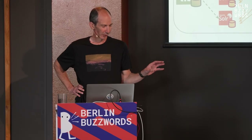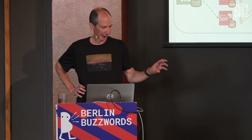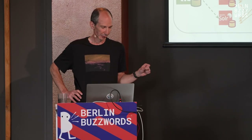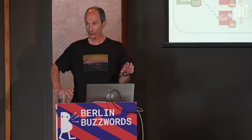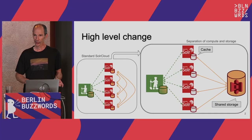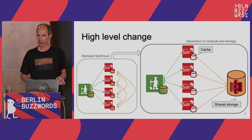As a teaser, here is what I'm going to present. We are taking SolrCloud as it is on the left, with persistent storage and ZooKeeper coordination, and moving to something like on the right. The local disks are only cache, and the shared storage — for example, S3 — is where the indexes are persisted.